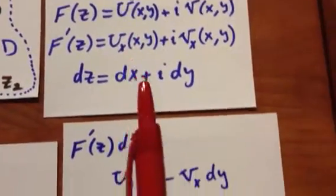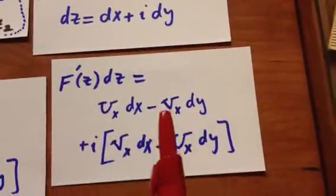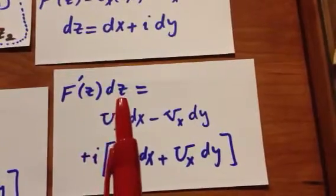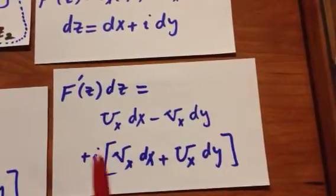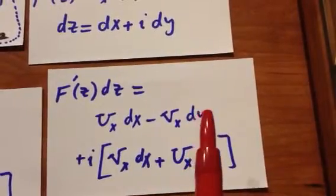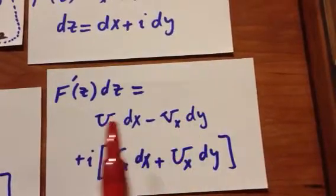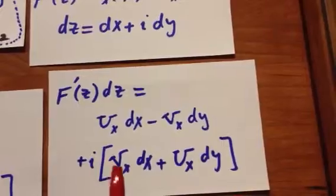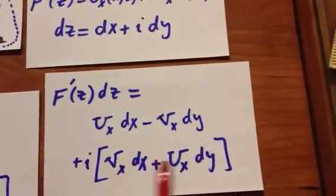Previously, we calculated F prime of z dz. And the problem was to write the real part in terms of U only and the imaginary part in terms of V only.